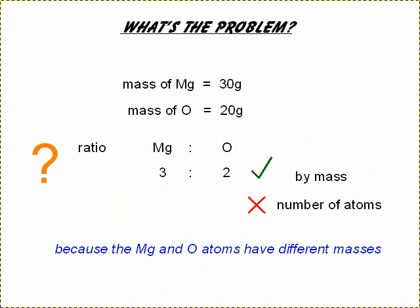So what's the problem? We can imagine that we've done an experiment and 30 grams of magnesium reacted with 20 grams of oxygen. I'm trying to work out the formula, and you might go that the ratio of magnesium to oxygen is 3 to 2, which is 30 to 20. Well, that's correct by mass, but it's not correct in terms of the number of atoms, and that's because the magnesium and oxygen atoms have different masses.